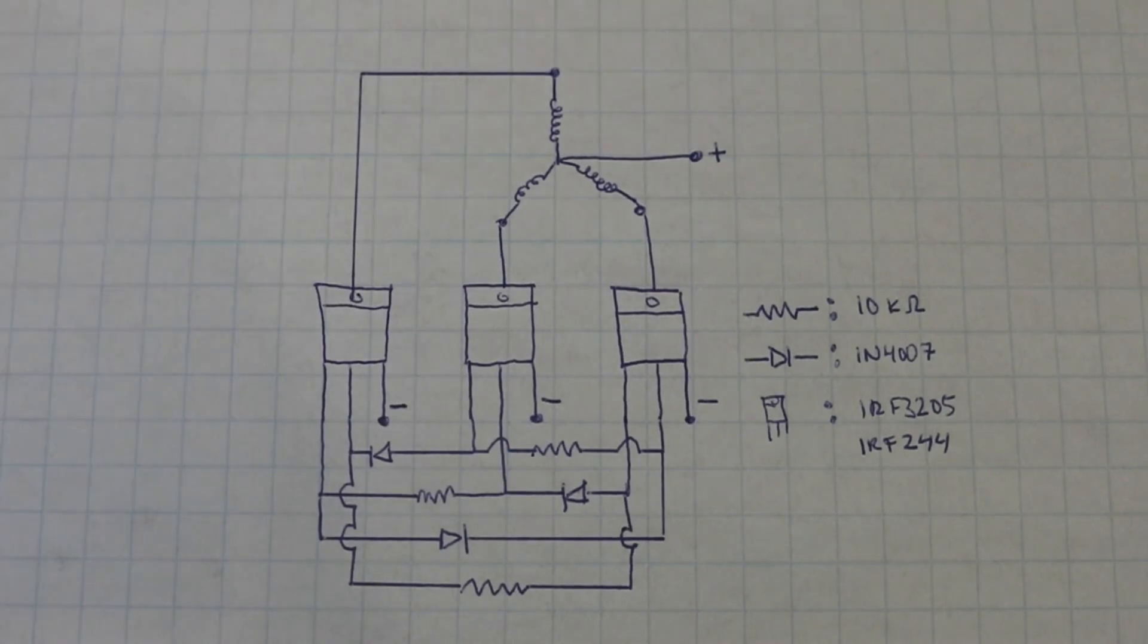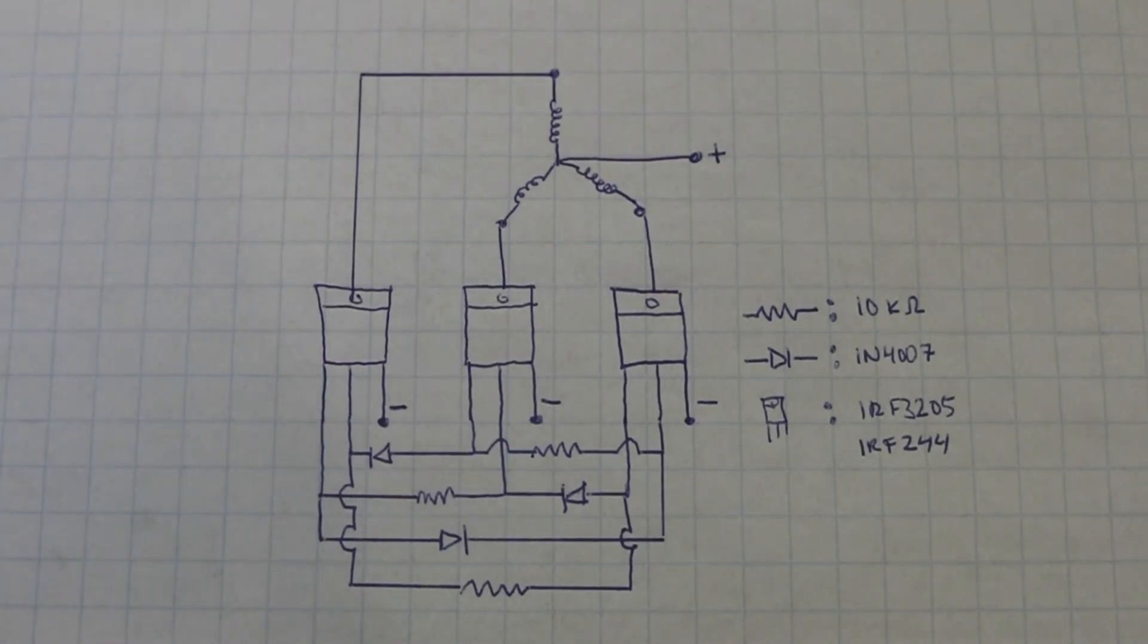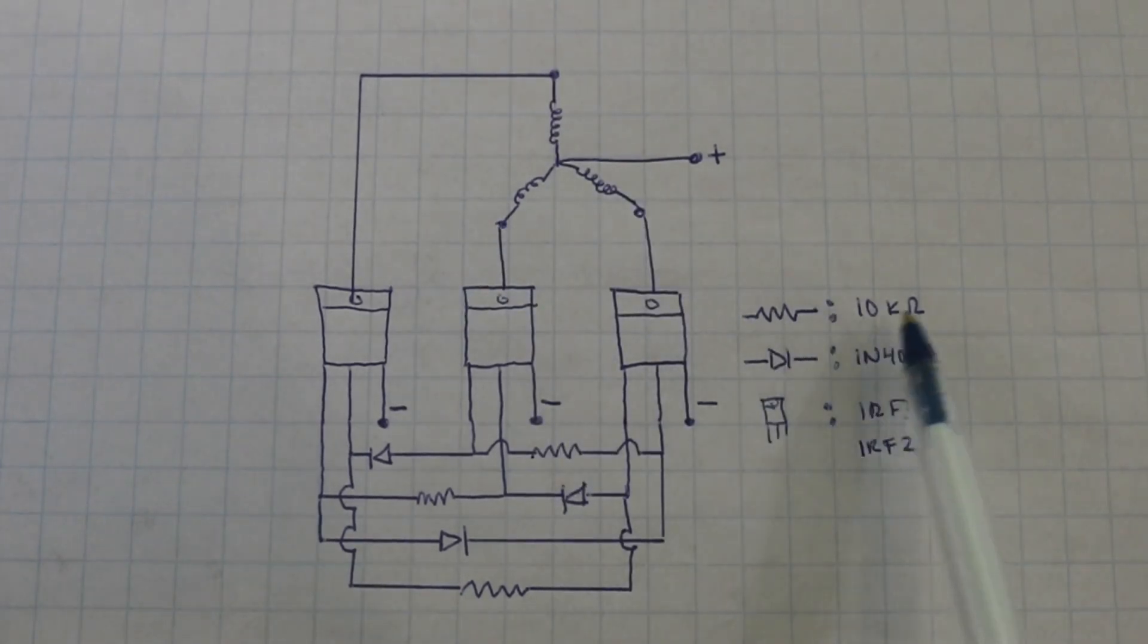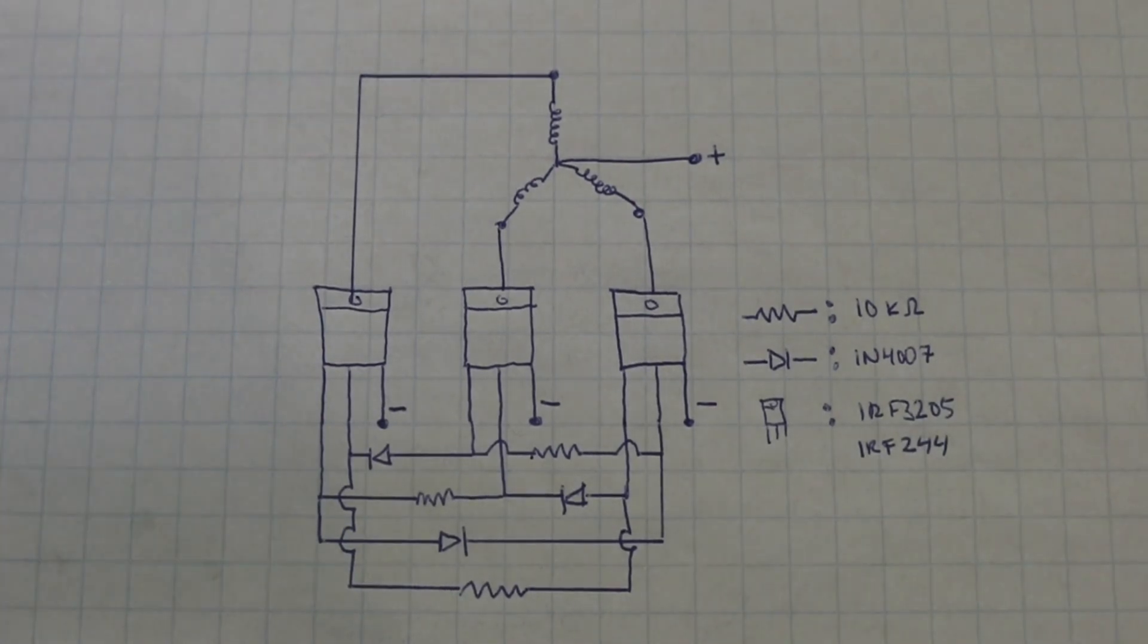Here you can see the diagram. It is very simple, you need 9 components, plus your motor, of course. 3 resistors, 10 kilo ohms each. Also 3 diodes, I am using the 1N4007, very common diode, but you can use any rectifier diode.